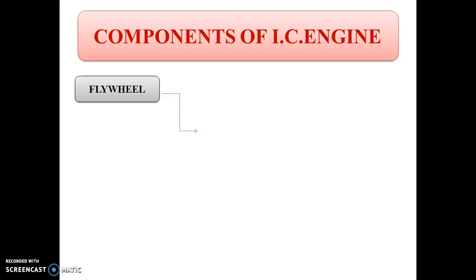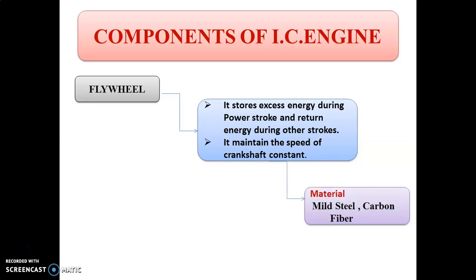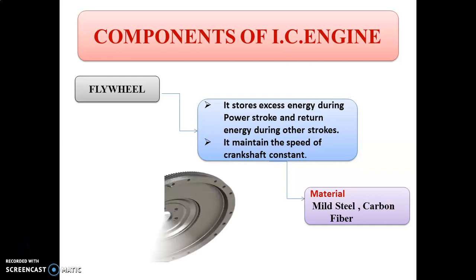The next component is the flywheel. It is a big wheel attached to the crankshaft that maintains the speed of the engine constant. The flywheel stores the excess energy during the power stroke and returns this energy during other strokes whenever there is a requirement, maintaining the speed of the crankshaft constant. The flywheel is made up from mild steel, and for high-speed applications requiring light weight, carbon fiber or composite material is also used. The figure shows the flywheel used for IC engine.